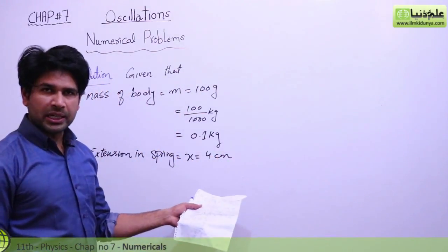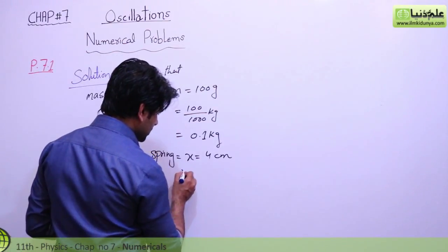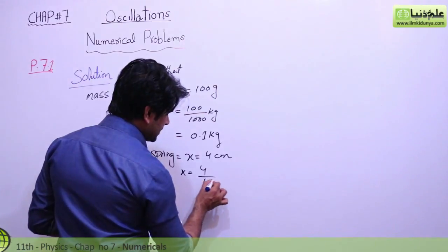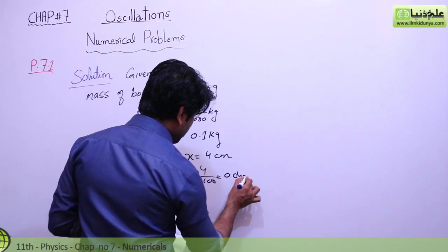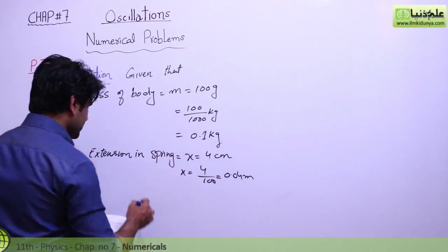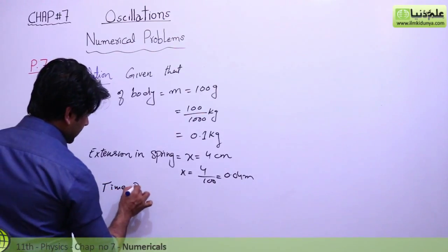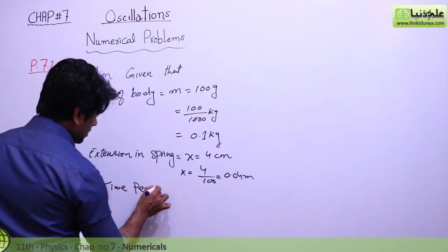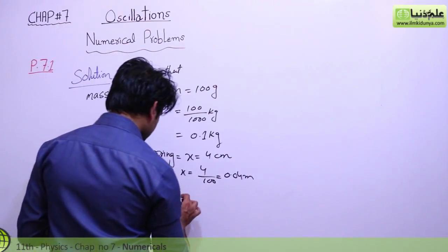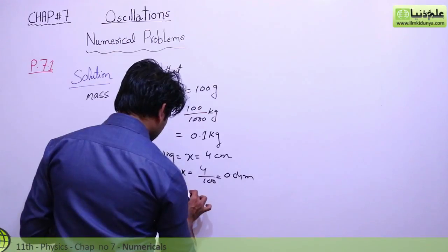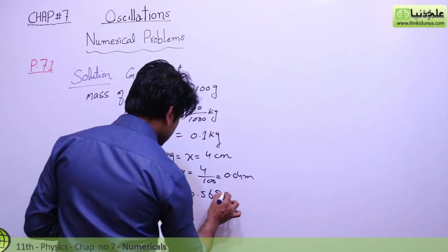We will convert this centimeter into meter by dividing by 100, because we know that 1 meter contains 100 centimeters, so it will be 0.04 meter. Now the next given value is the time period T, which is equal to 0.568 seconds.